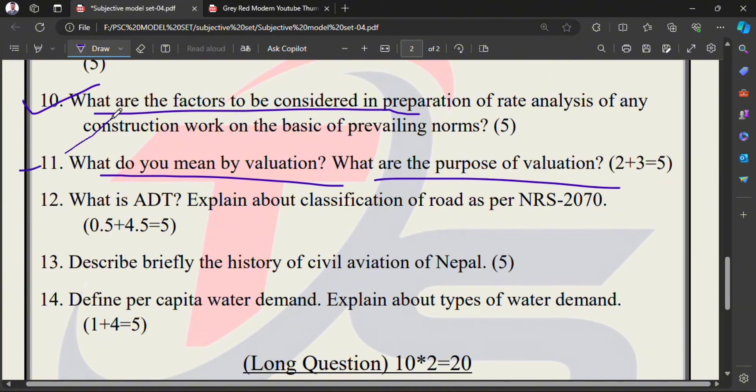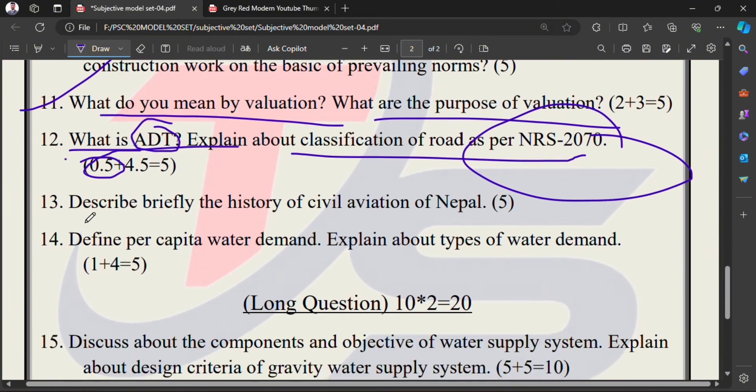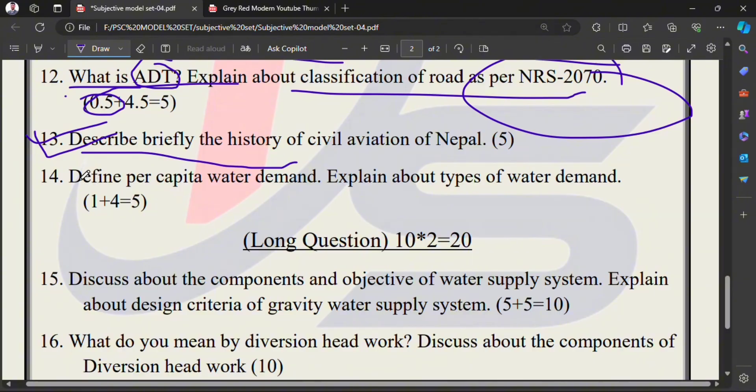What is ADT? Explain about the classification of road as per NRS. You need to write about ADT - write the full form of ADT, how to calculate ADT, that's 0.5 marks. Then classification of road. 13th number: Describe briefly the history of civil aviation. This is a famous question.